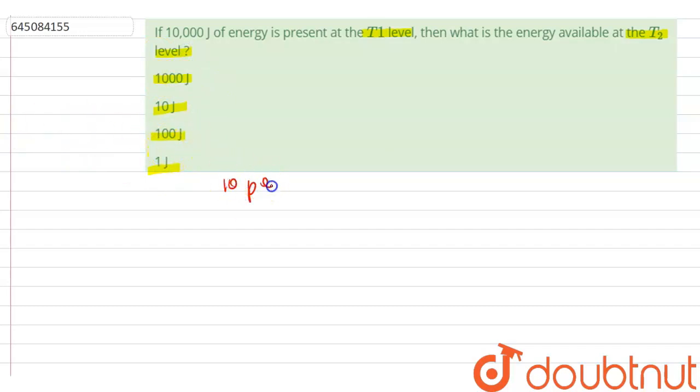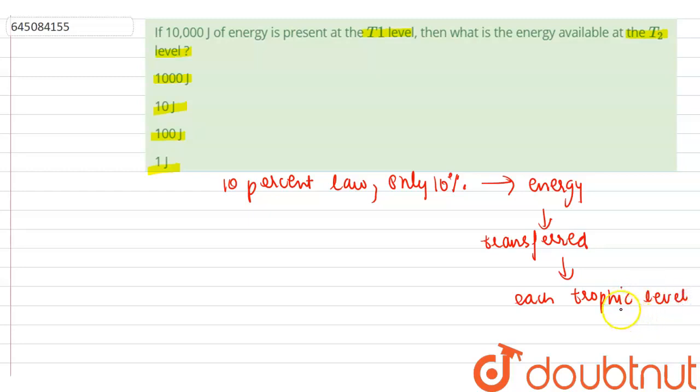So according to the 10 percent law, only 10 percent of the energy is transferred from one trophic level to another trophic level. It is transferred to each trophic level.